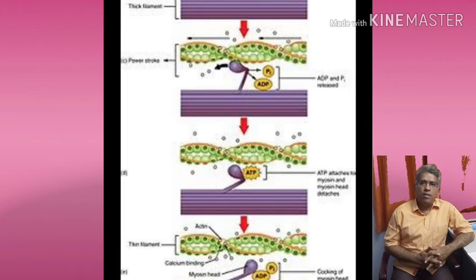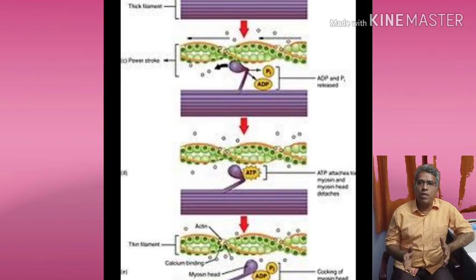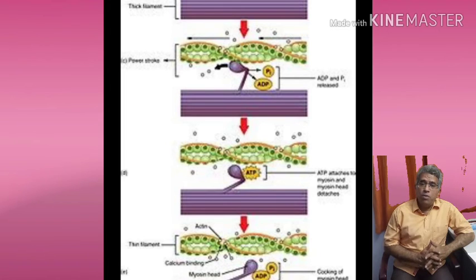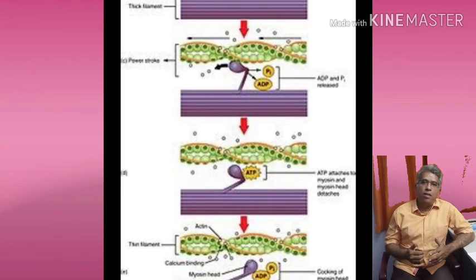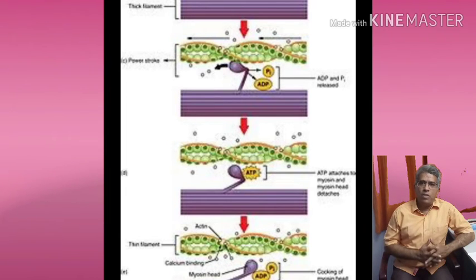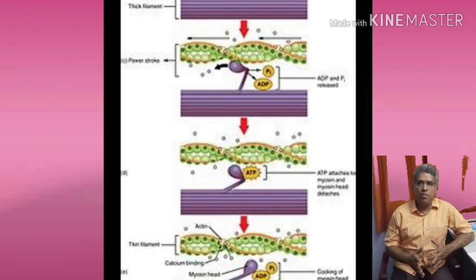When the stimulus disappears, the Z lines come to their normal position, and this is called relaxation. The repeated attachment of myosin heads, formation of cross bridges, detachment, and collapsing of cross bridges at regular intervals is called the walk-along mechanism, also known as the ratchet mechanism. The ratchet mechanism constitutes the power stroke and the recovery stroke.